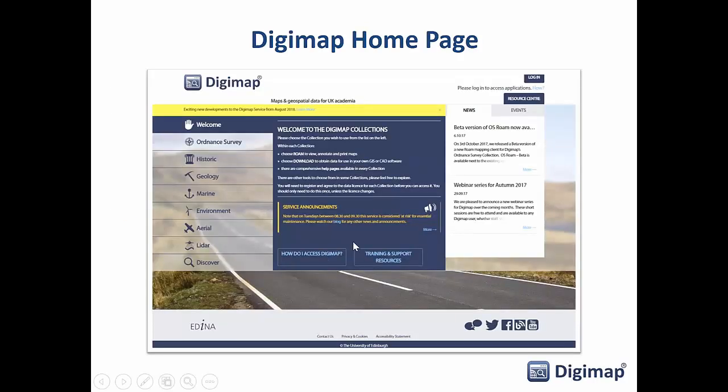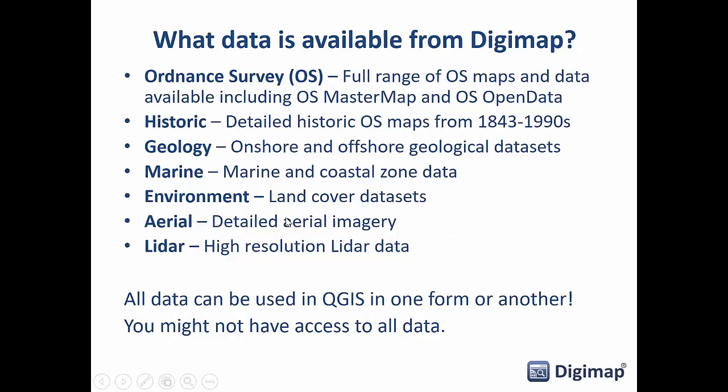Here's the Digimap homepage with collections down the left-hand side. Pretty much every single data product we have in Digimap can be used in QGIS. We have data from Ordnance Survey, Historic Digimap (scanned historic Ordnance Survey maps), geology data, marine environment and land cover datasets, aerial Digimap with 25 centimeter resolution aerial imagery, and LiDAR — our newest collection — which is high resolution LiDAR data from the Environment Agency of England and Wales, and also SEPA, the Scottish Environmental Protection Agency, including digital terrain models, digital surface models, point cloud data, and aerial and near-infrared imagery.